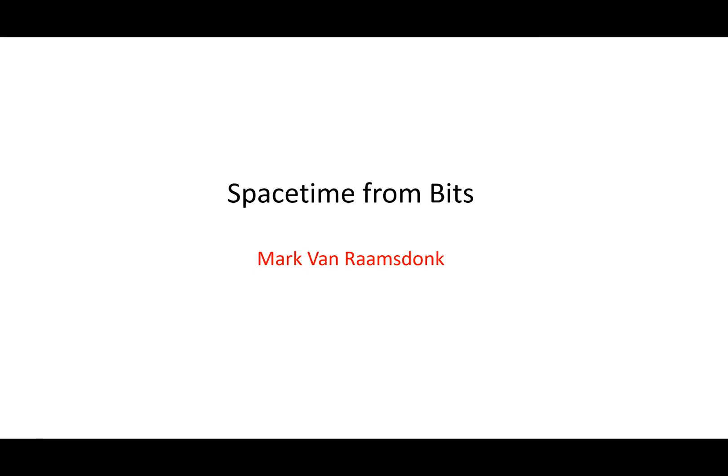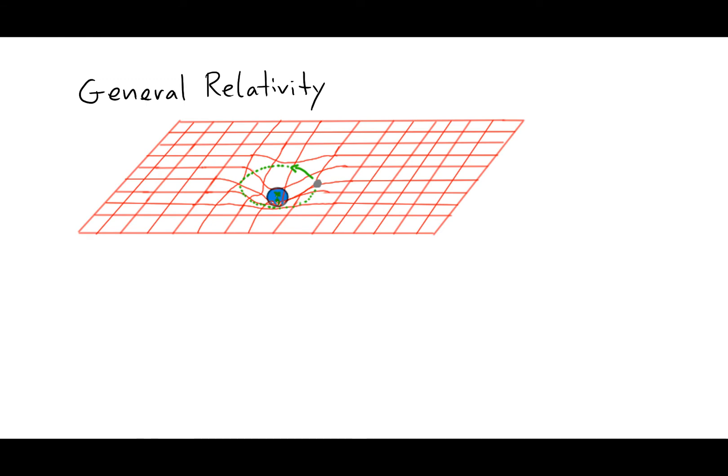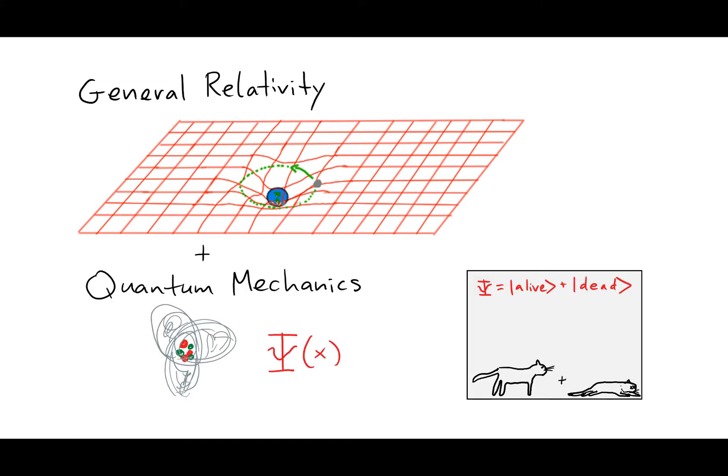For decades, researchers on the frontiers of theoretical physics have tried to come up with a unified understanding of general relativity, Einstein's picture that gravity comes from the warping of space-time by matter and energy, and quantum mechanics, the sometimes bizarre physical rules needed to understand physics at subatomic distances.